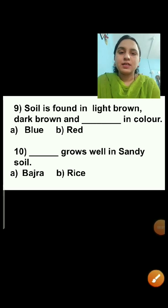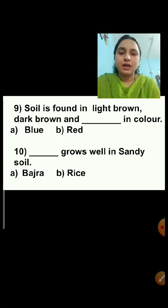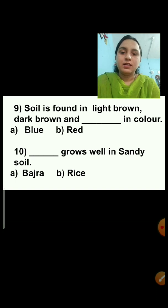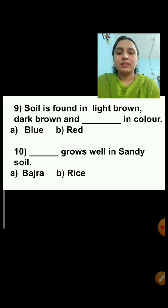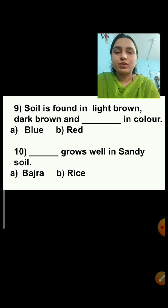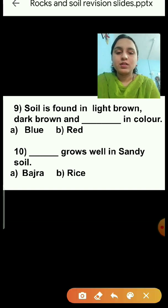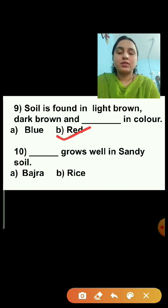Question number nine: Soil is found in light brown, dark brown, and dash in color. Soil is found in light brown, dark brown, and red in color. So red is the correct option — we will choose red. Blue is the wrong answer.